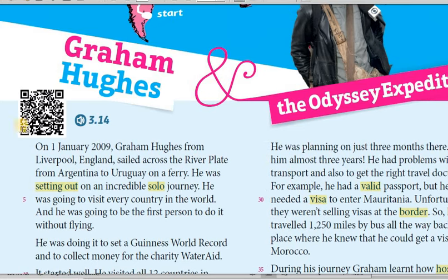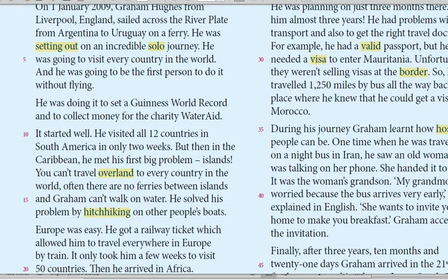So let's start listening to the QR. We will listen together to the QR code audio and analyze and translate the words. On the 1st of January 2009, Graham Hughes from Liverpool, England sailed across the River Plate from Argentina to Uruguay on a ferry. He was setting out on an incredible solo journey. He was going to visit every country in the world, and he was going to be the first person to do it without flying. He was doing it to set a Guinness world record and to collect money for the charity WaterAid.